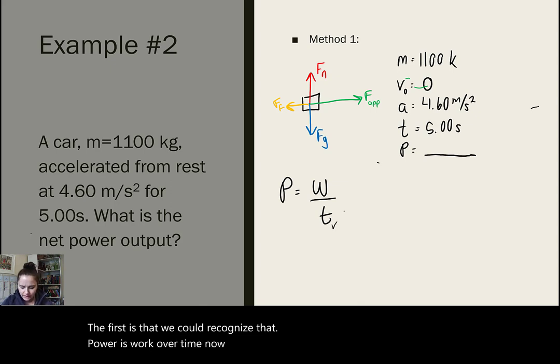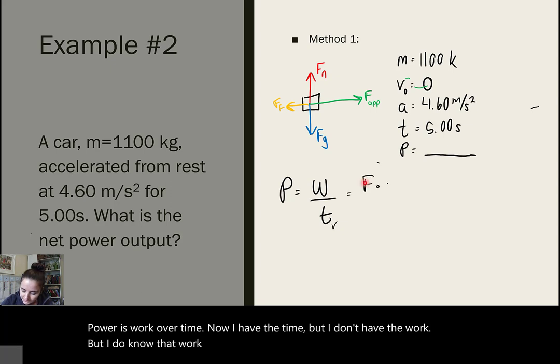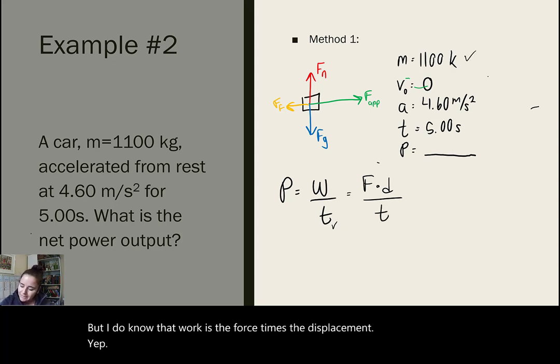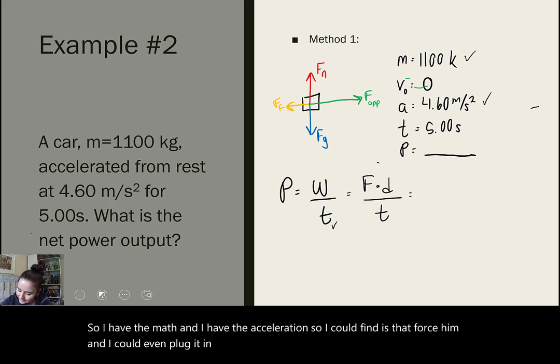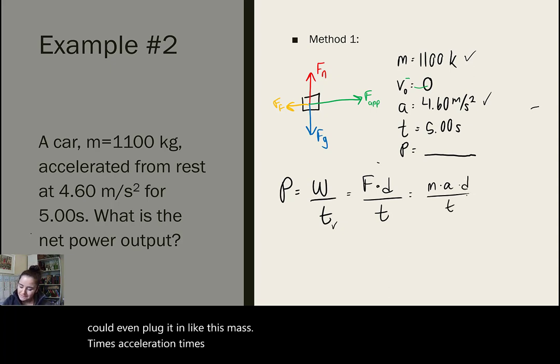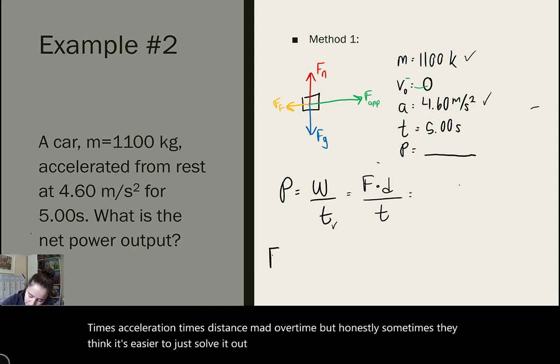So, there are two ways that we could attempt to solve this. The first is we could recognize that power is work over time. Now, I have the time but I don't have the work. But, I do know that work is the force times the displacement. So, I have the mass and I have the acceleration, so I could find that force. And I could even plug it in like this: mass times acceleration times distance over time. But, honestly, sometimes I think it's easier to just solve it out in steps. So, let's try that.